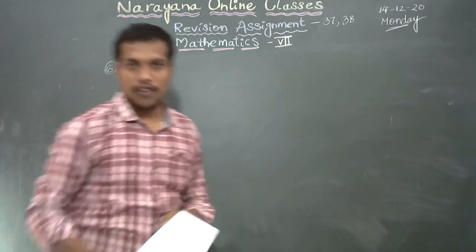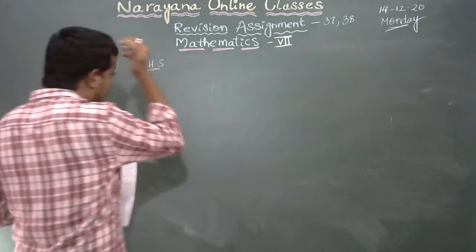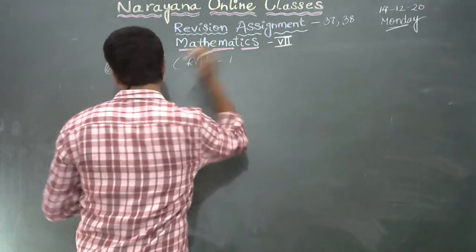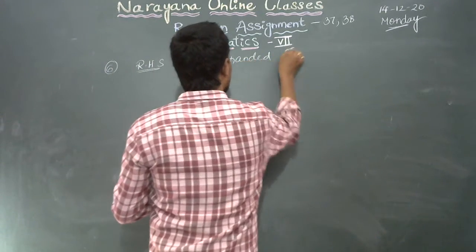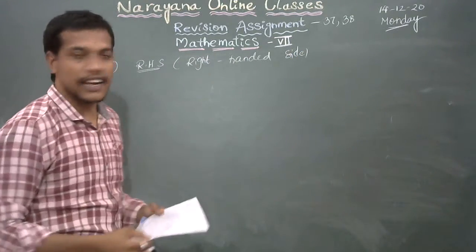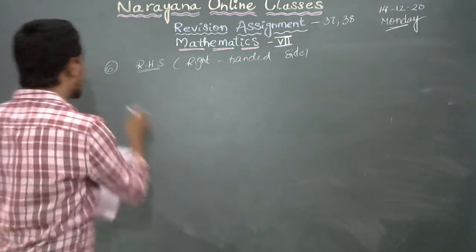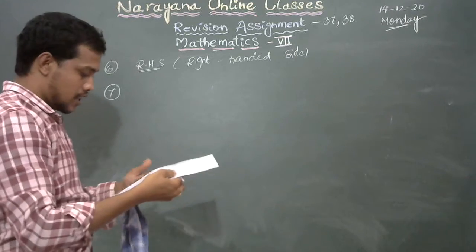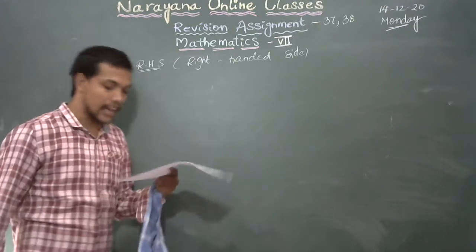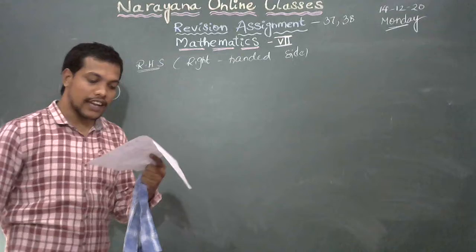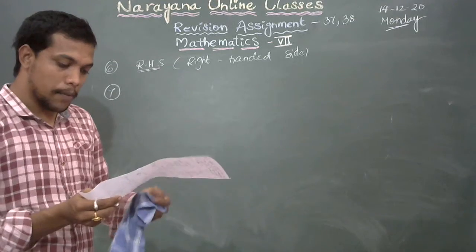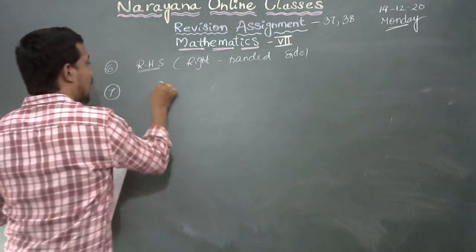What is the meaning of RHS? RHS means right-handed side. What is the seventh one? It should be established by RHS congruent rule. Triangle ABC is congruent to triangle RPQ. What additional information is needed? Angle P equal to 90 and AB equal to RP. When RHS congruent rule...